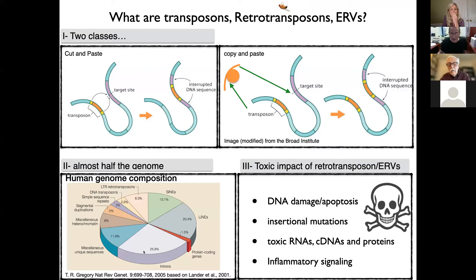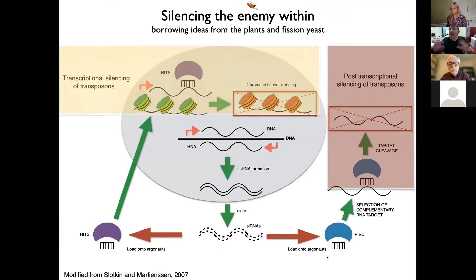These elements constitute a vast fraction of the human genome, approaching 40 to 50% of the DNA content. Most are not fully functional, but they may be expressed and may encode proteins, and a subset are fully replication competent. Generally speaking, when they are expressed, they are toxic. They can cause DNA damage leading to either senescence or apoptotic cell death. They can cause insertional mutations, and their RNAs, the cDNAs they encode, and the proteins they encode can be toxic — in particular leading to inflammatory signaling. It's not surprising that all plants and animals with these elements have evolved sophisticated, multi-layered systems for silencing them.